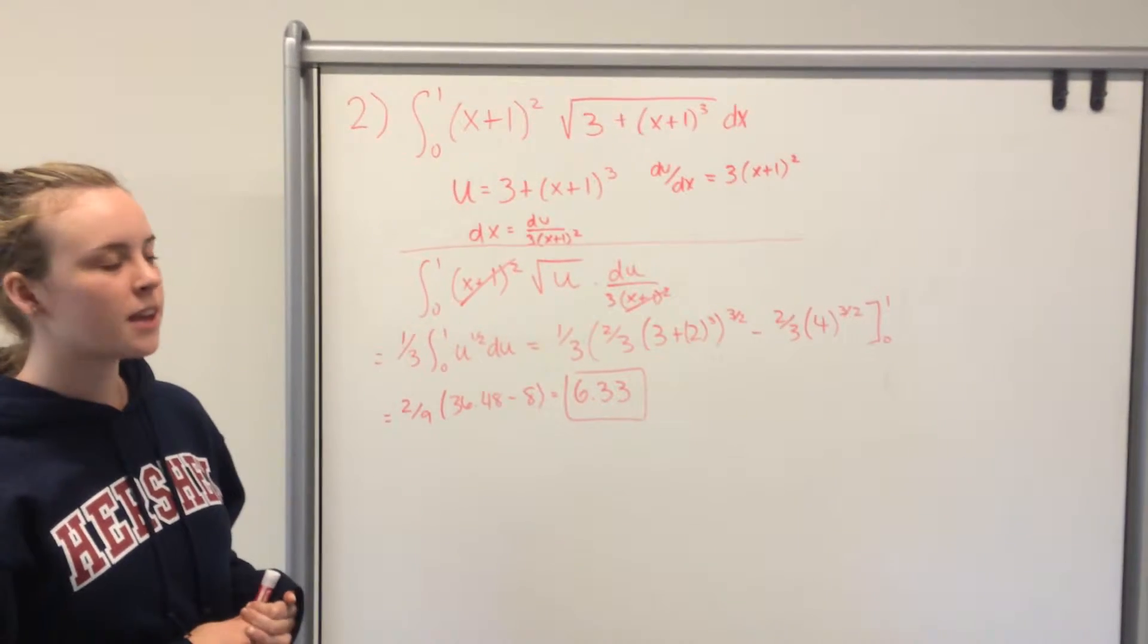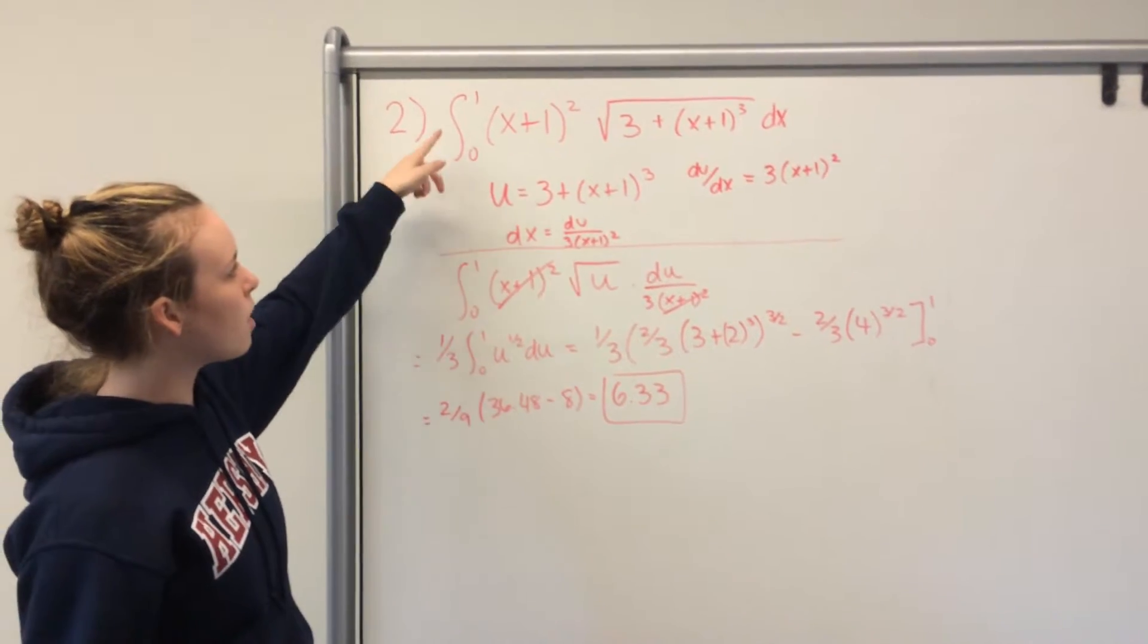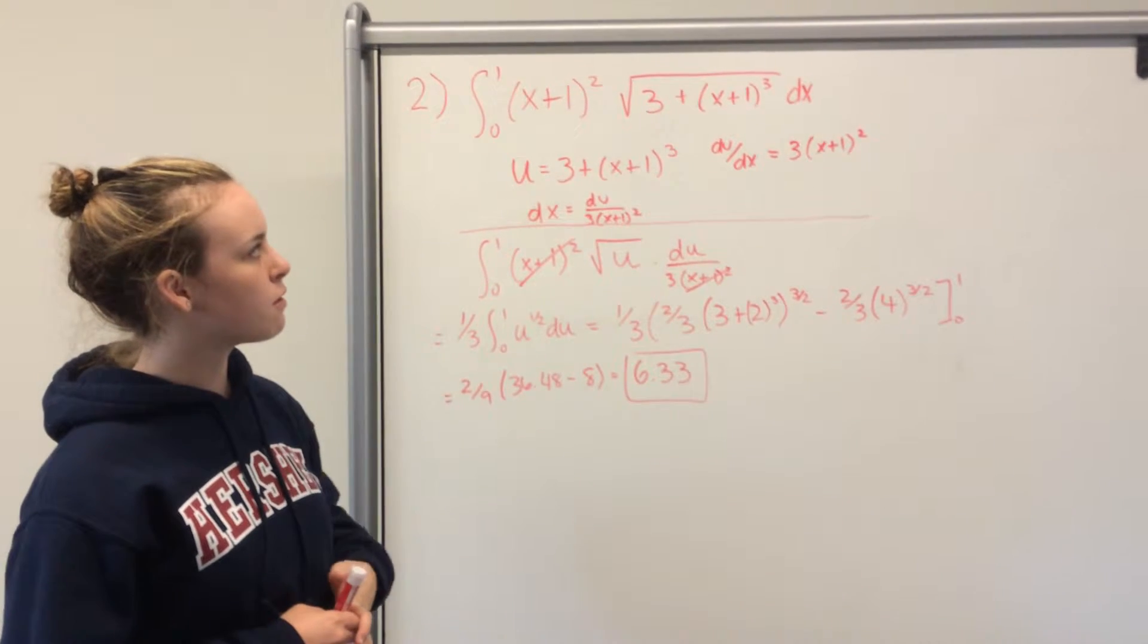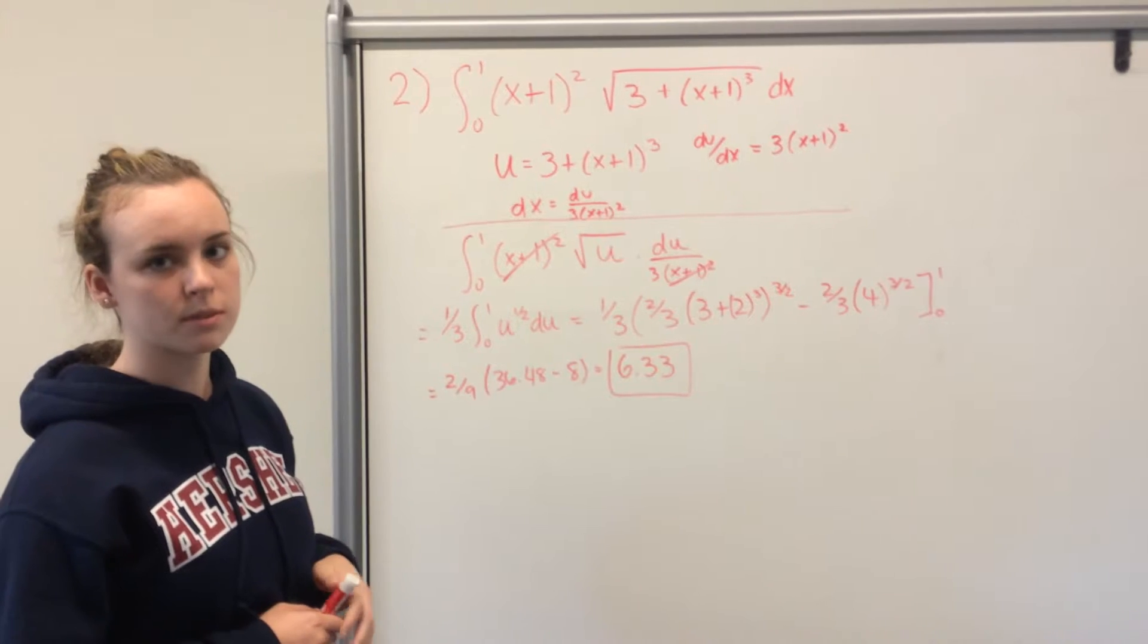The problem is to take the integral from 0 to 1 of x plus 1 squared times the square root of 3 plus x plus 1 cubed dx.